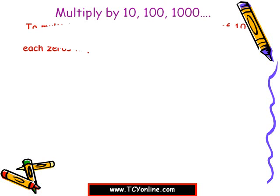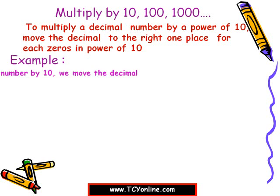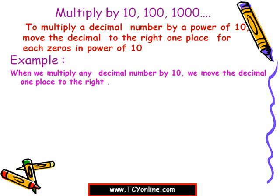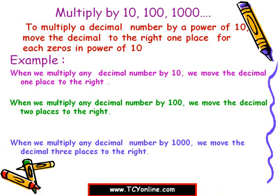Now let's learn the rule which we use while multiplying a decimal number by the power of 10. In that case, we will move the decimal one place to the right for each zero in the power of 10. For example, multiplying by 10 moves the decimal one place right, multiplying by 100 moves it two places right, and multiplying by 1000 moves it three places to the right.